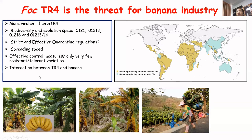We still haven't developed very effective control measures. Only a very few resistant and tolerant varieties have been adopted to sustain the banana industry. So in order to develop effective control measures, I think we should investigate the interaction mechanism between TR4 and the banana.